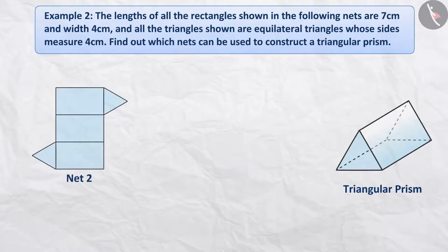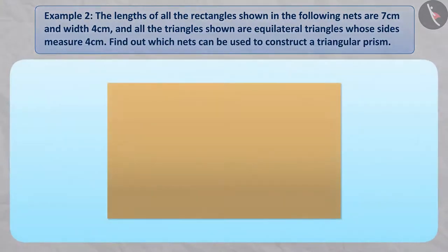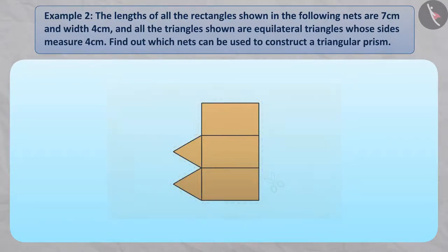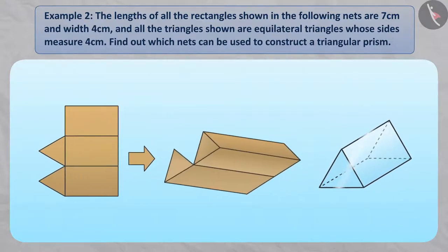Similarly, if we fold the second shape, in this case, also we will get a triangular prism. Now, draw the third shape on a cardboard. Cut it out of the cardboard and fold it to make a triangular prism. You will be able to know that in this case, you will not get a triangular prism.